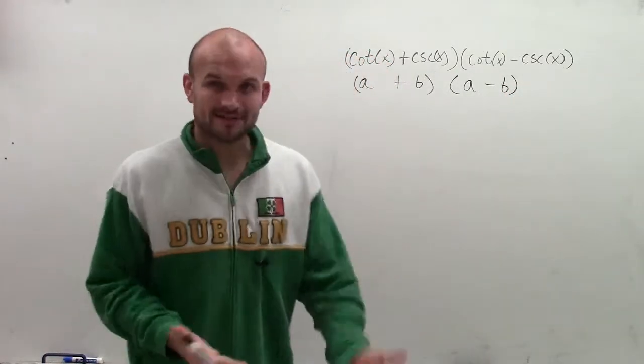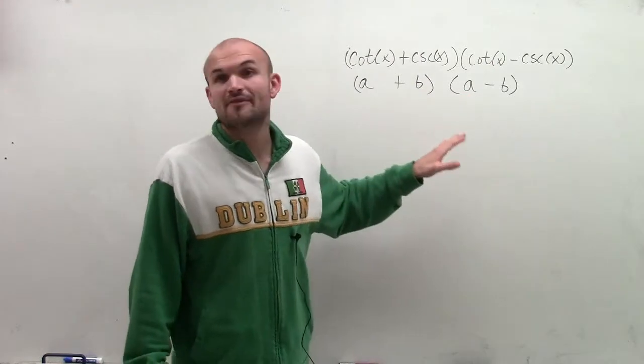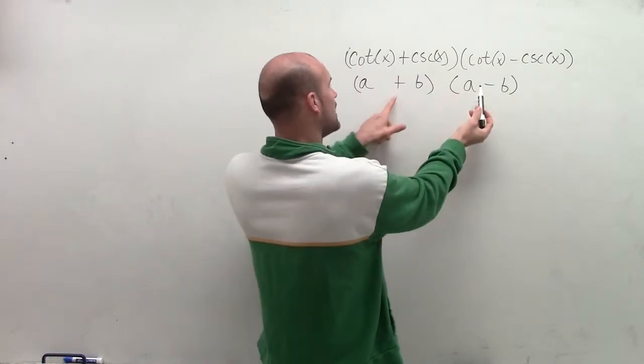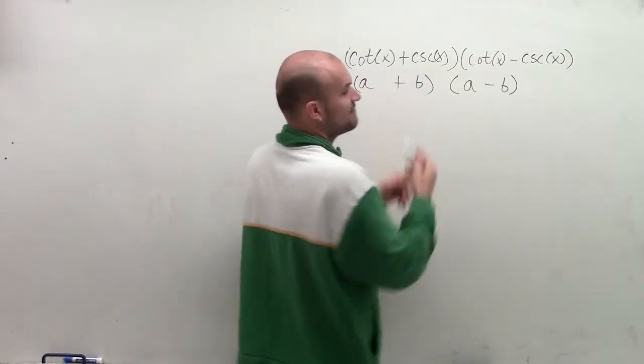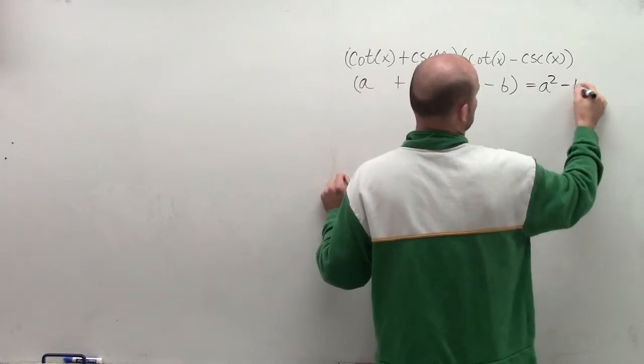Well, hopefully if you kind of have a little factoring practice, we notice, right, looking at this, this is part of our definition of difference of two squares. When multiplying a binomial times a binomial, where the operations are opposite and I have the exact same terms, we know that this is going to be A squared minus B squared.